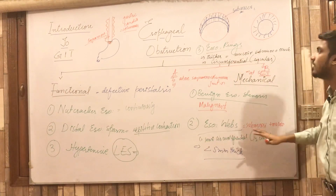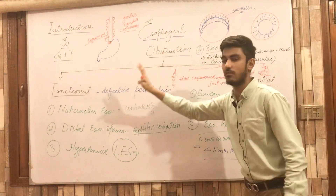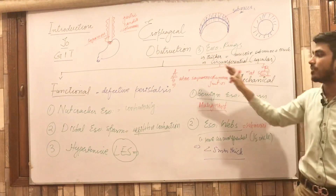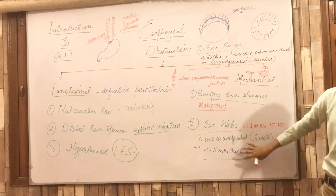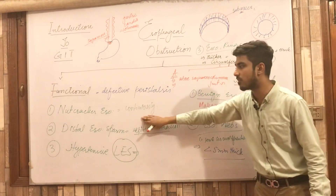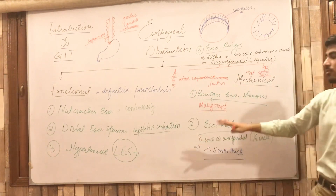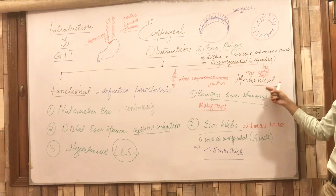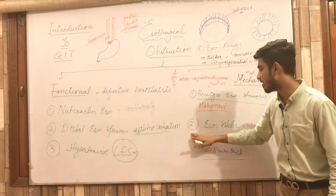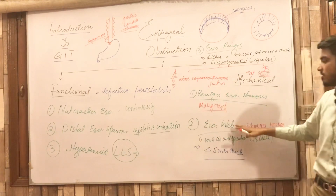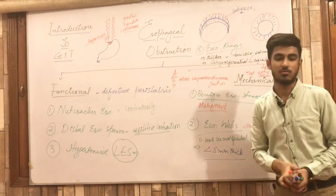To summarize, esophageal obstruction has two types: functional and mechanical. Functional has three principal forms — nutcracker esophagus, distal esophageal spasm, and hypertensive lower esophageal sphincter. Mechanical also has three principal forms — benign esophageal stenosis (which may be malignant), esophageal webs, and esophageal rings. Thank you so much.